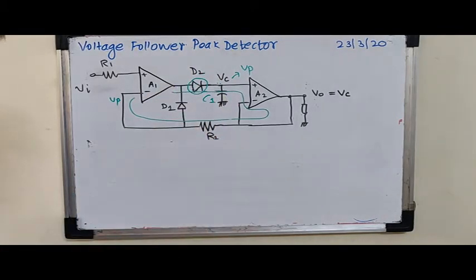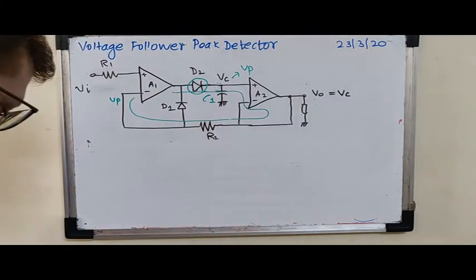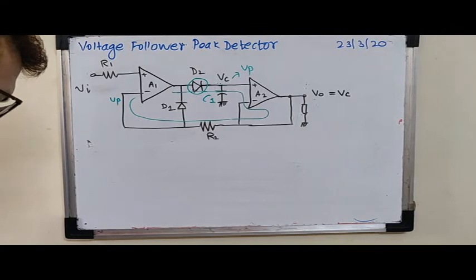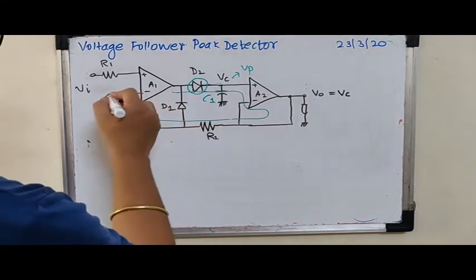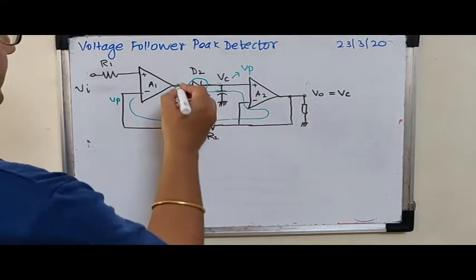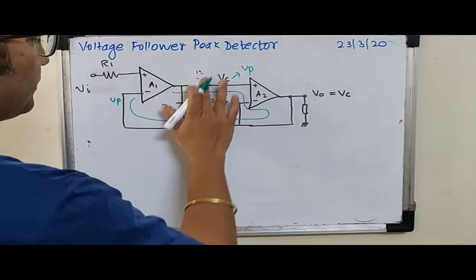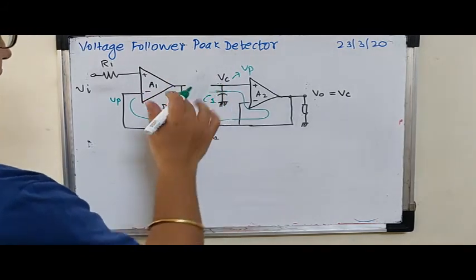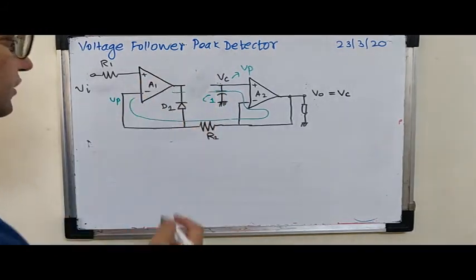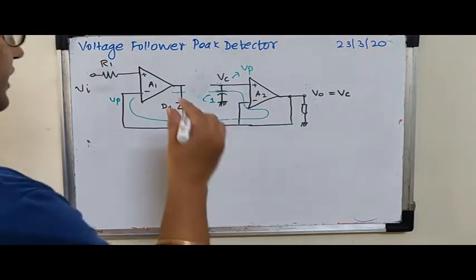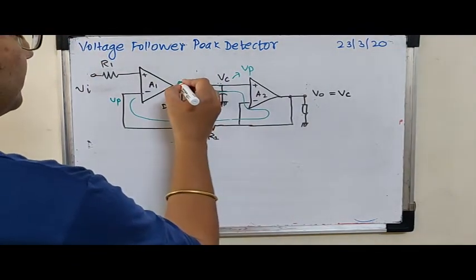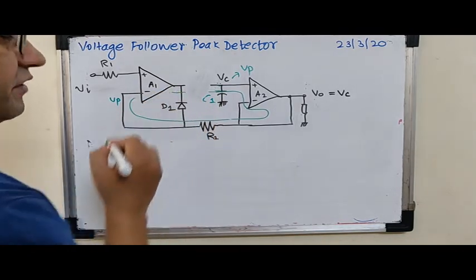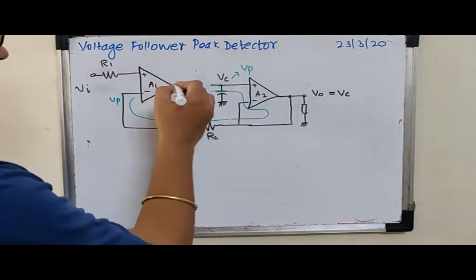So D2 is simply switched off. Again, look at the situation over here that if this is switched off now, this is totally out of picture and the output is now pushed to negative saturation, but it never goes to negative saturation because after a certain voltage,